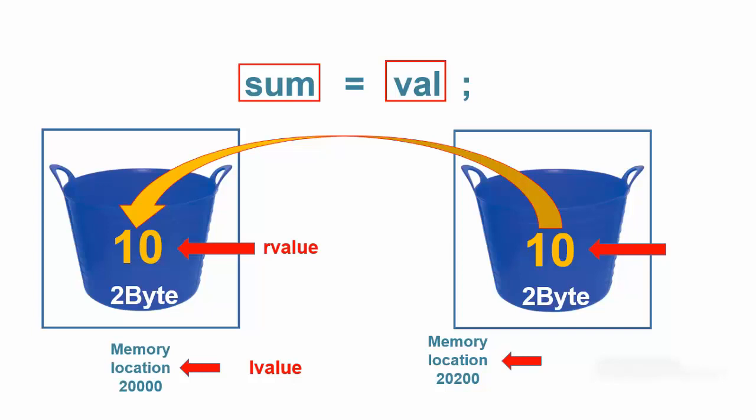This process therefore replaces whatever may have been in sum's bucket with the contents of val's bucket. Note that all simple assignment statements move the contents of the bucket on the right side of the assignment operator into the bucket of the operand on the left hand side of the assignment operator. It should also be obvious that all simple assignment statements move the right operand's R value into the left operand's R value.